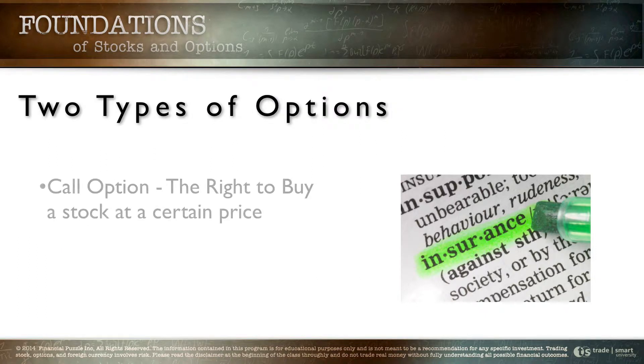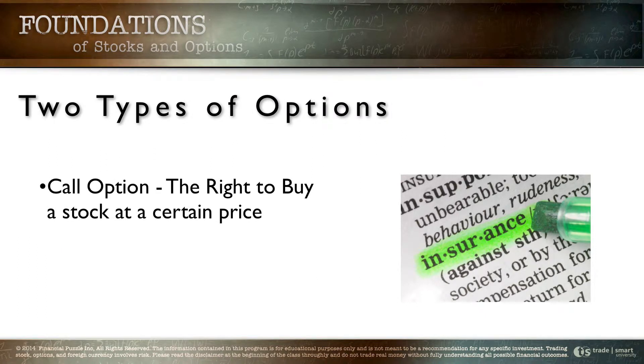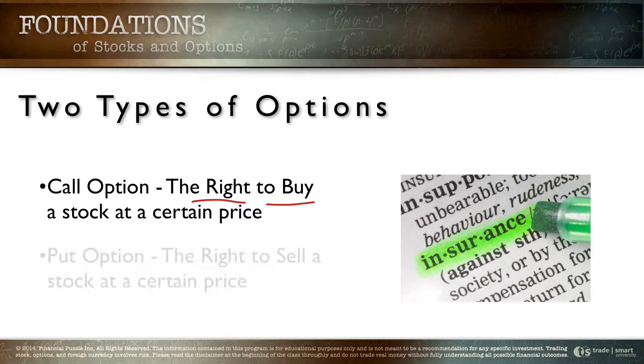There are two types of options that we can trade. We've got the call option, which gives the buyer the right to buy the stock at a specific price. And then we've got the put option, which gives the buyer the right to sell the stock at a specific price. So we've got two types of options — the calls and the puts — and the basic definition is the right but not the obligation to buy or sell a specific stock at a specific price on or before a specific date.